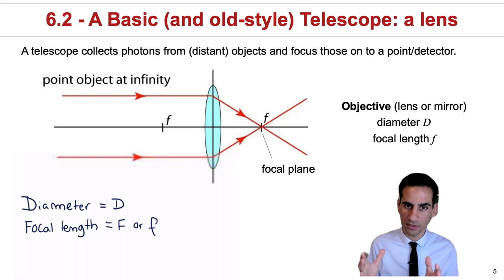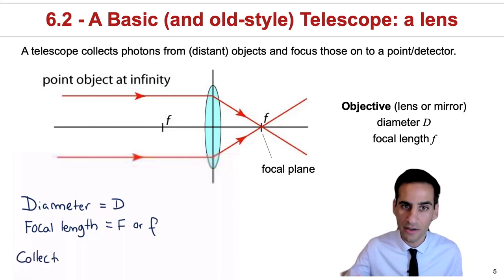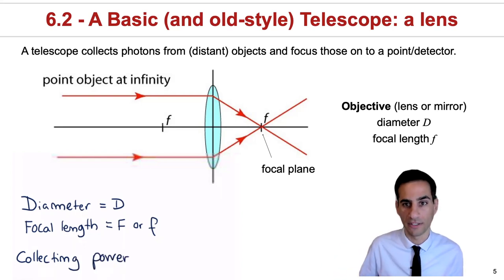Essentially, how much flux you will be able to collect from astronomical objects. Therefore, you do want to try to maximize the diameter because that will maximize your collecting area, and therefore you'll be able to see further or fainter.